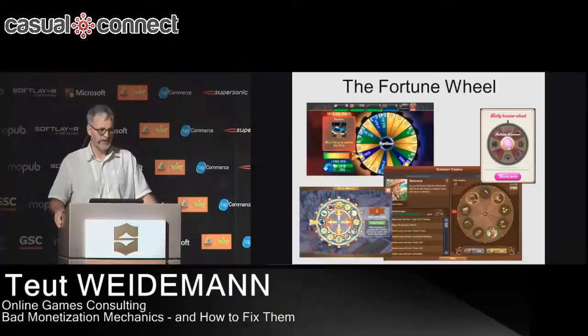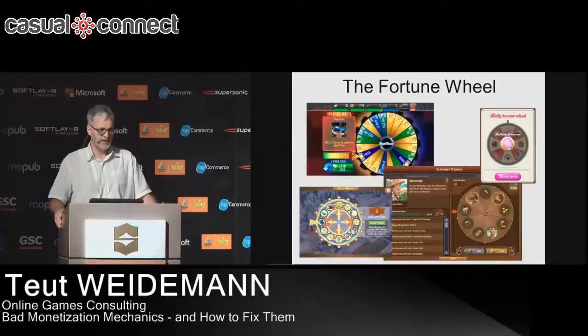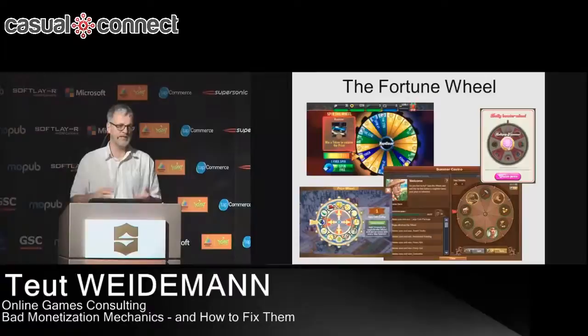The first one I want to address is the so-called fortune wheel. It's very popular in many games, specifically strategy games like Age of Fire and many other RPGs. It's basically just a random lottery ticket — you get one free item per day or every couple of hours, you turn the wheel and you get something. There's one sexy item on the wheel you always want to have, and you can spend money to actually turn the wheel again.